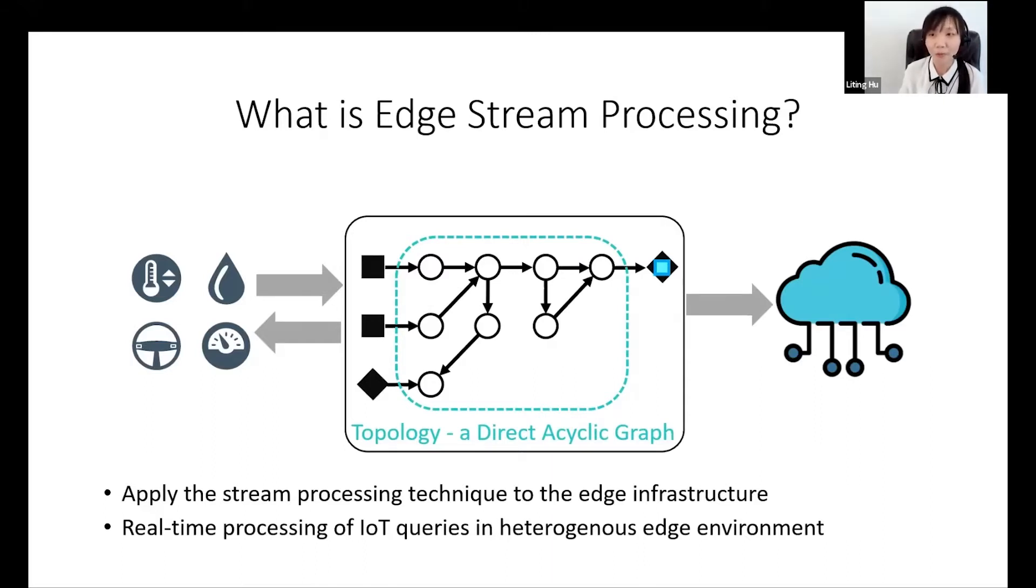The sync nodes are actuators or message queues to the cloud. The inner nodes are edge gateways or routers that run stream operators such as map, reduce, join, filter, or machine learning algorithms.